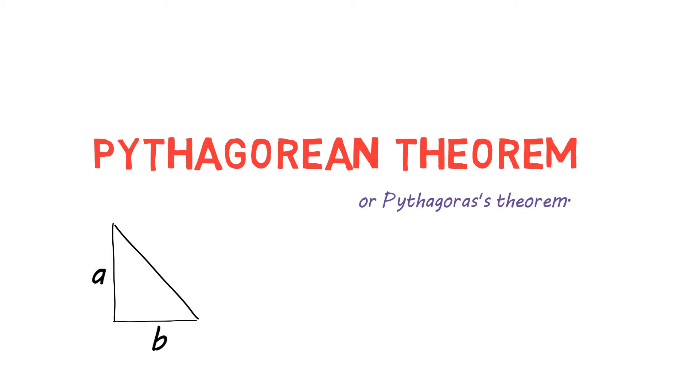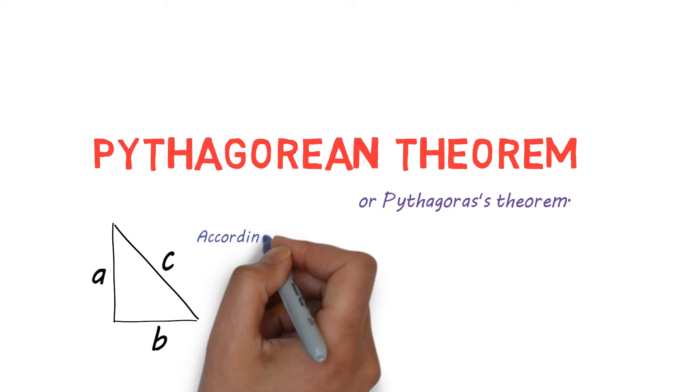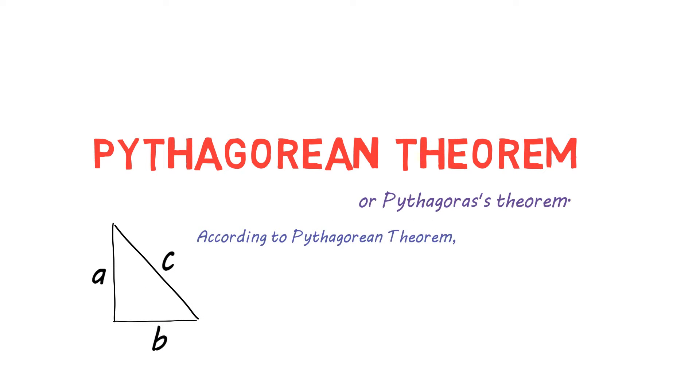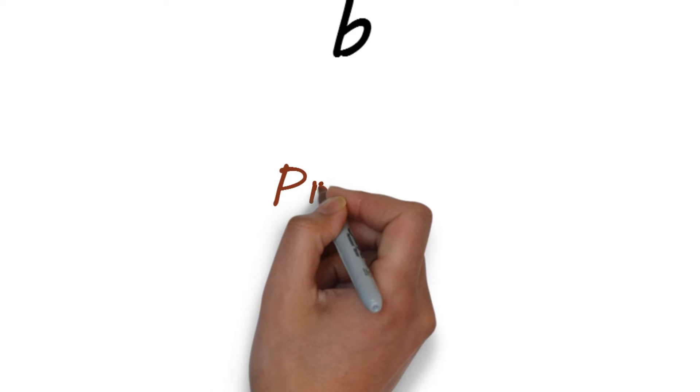Suppose there is a triangle of sides A, B and C where B is base, A is perpendicular and C is hypotenuse. Then according to Pythagorean Theorem, the square of the hypotenuse is equal to the sum of squares of other two sides. That is, A squared plus B squared is equal to C squared.